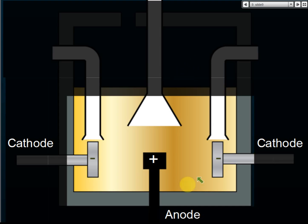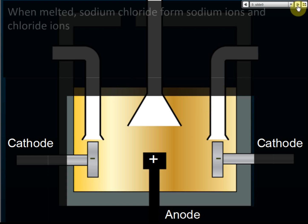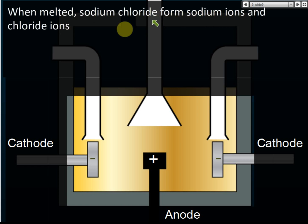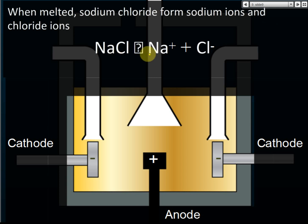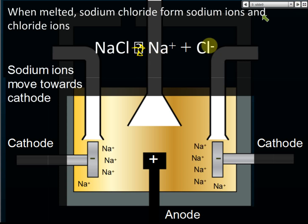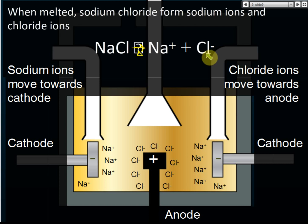During electrolysis of sodium chloride, when melted, the sodium chloride forms sodium ions and chloride ions. The sodium ions, carrying positive charge, will move towards the cathode, which is the negative electrode. The chloride ions will move to the anode, which is the positive electrode. So sodium goes to the cathode and chloride goes to the anode.